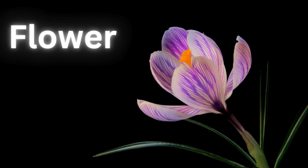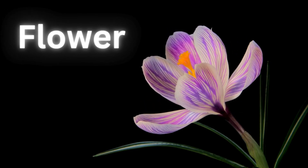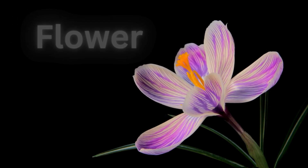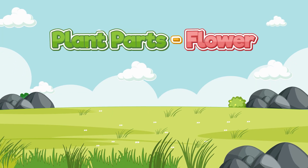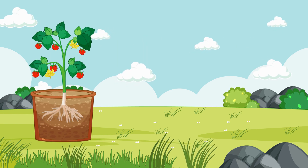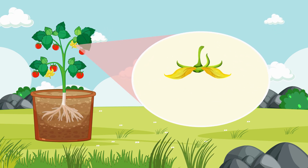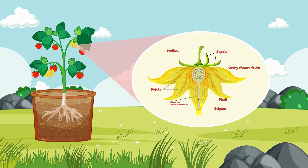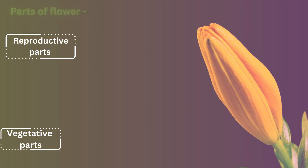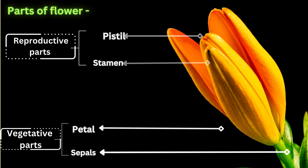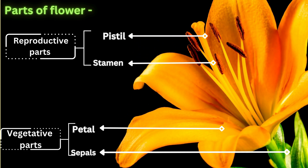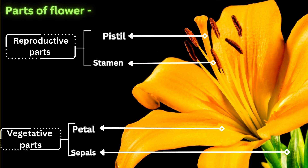Flowers are an integral part of the plant world, but did you know that they serve a vital role beyond just looking pretty? Let's dive into the fascinating world of flowers. Plants have various parts, each with specific functions that contribute to their growth, reproduction, and survival. In this video we will study about the basic parts of a flower and their functions. Understanding the structure of a flower involves recognizing both its vegetative and reproductive parts, each playing a crucial role in the plant's life cycle.